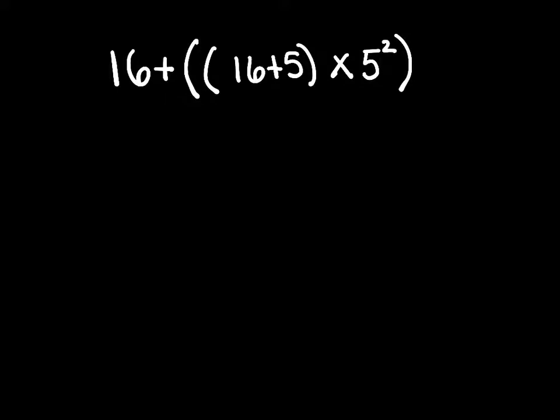Our initial problem looks like this. 16 plus parentheses parentheses 16 plus 5 close parentheses times 5 squared close parentheses. So again, remember our little phrase, please excuse my dear Aunt Sally, the P being for parentheses.